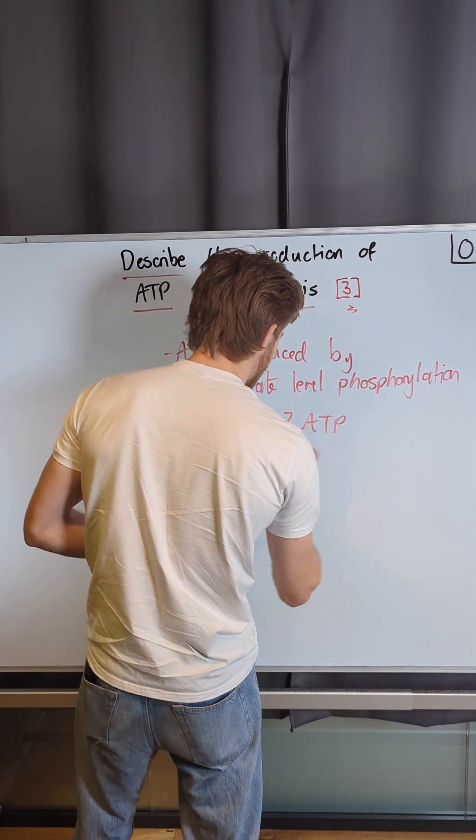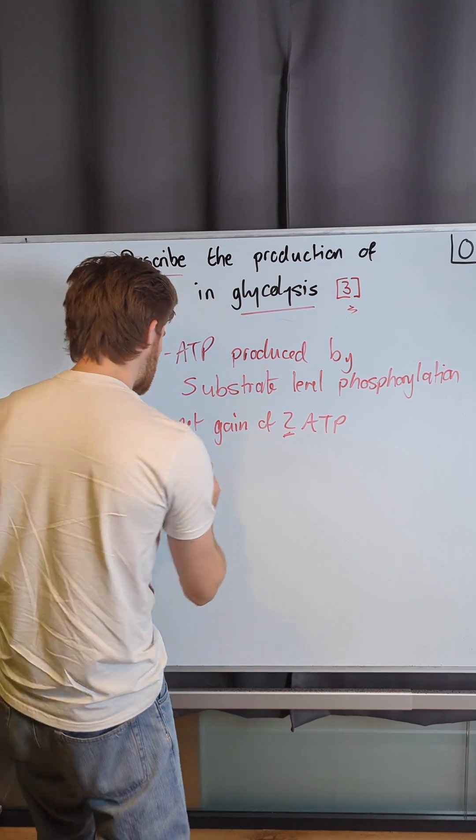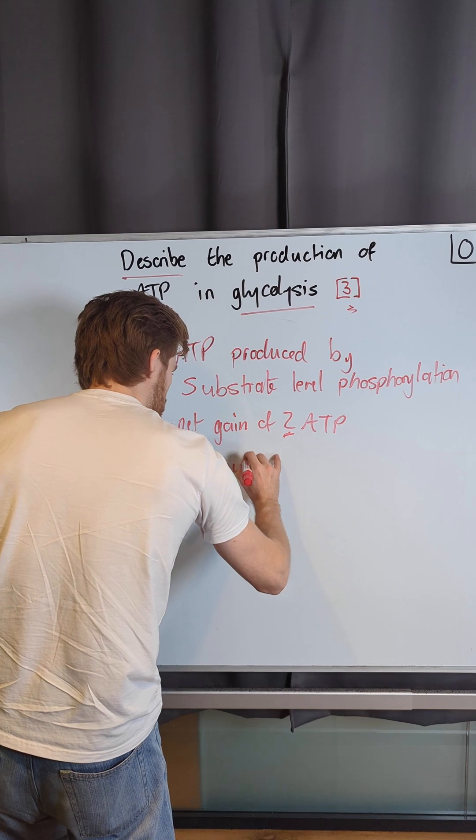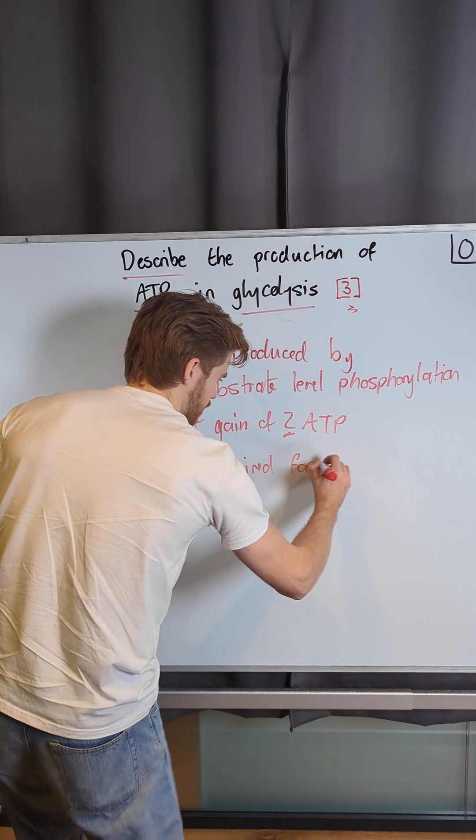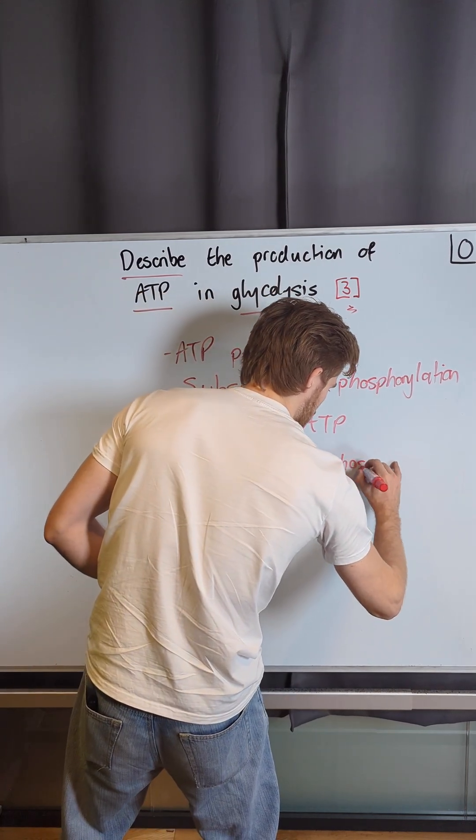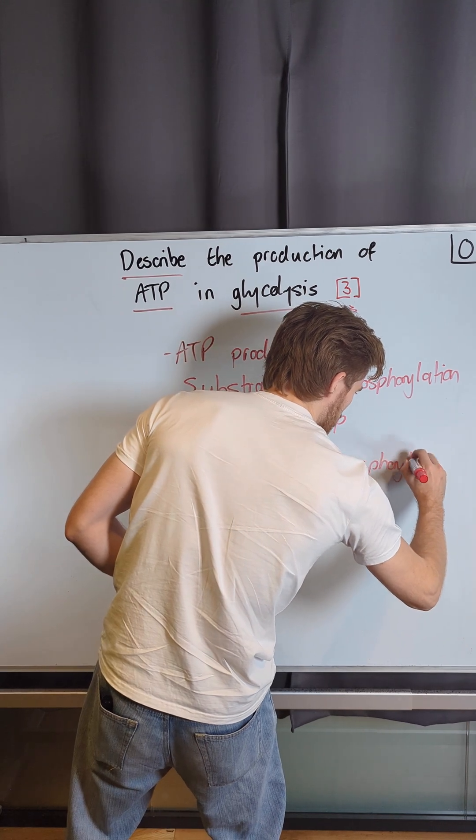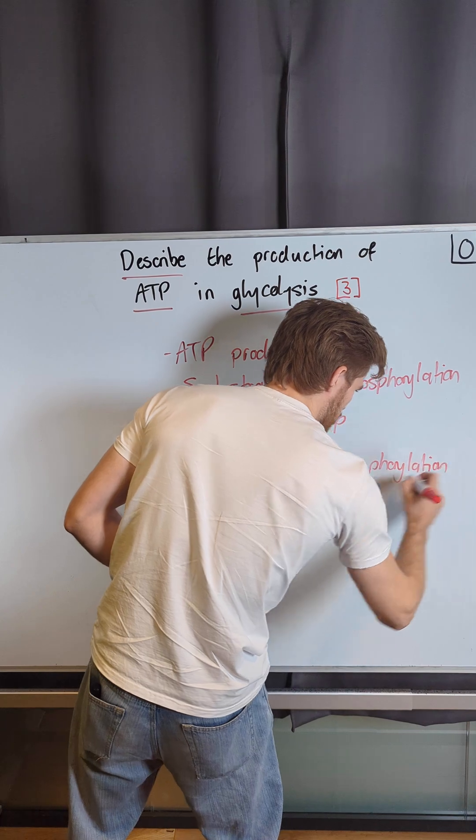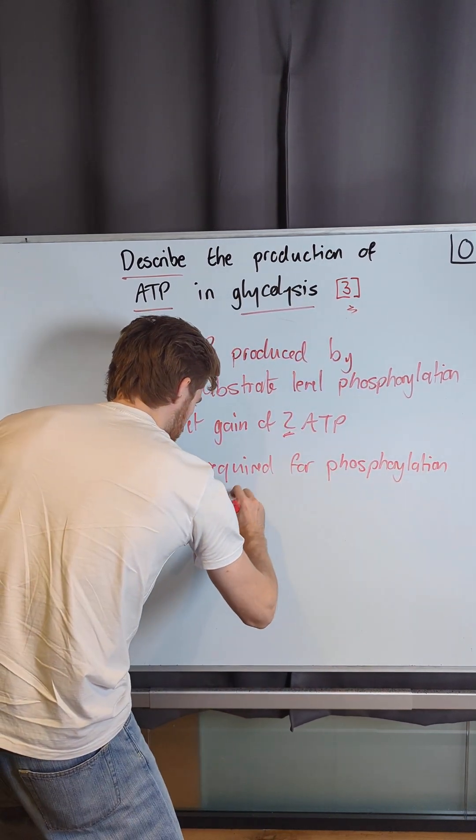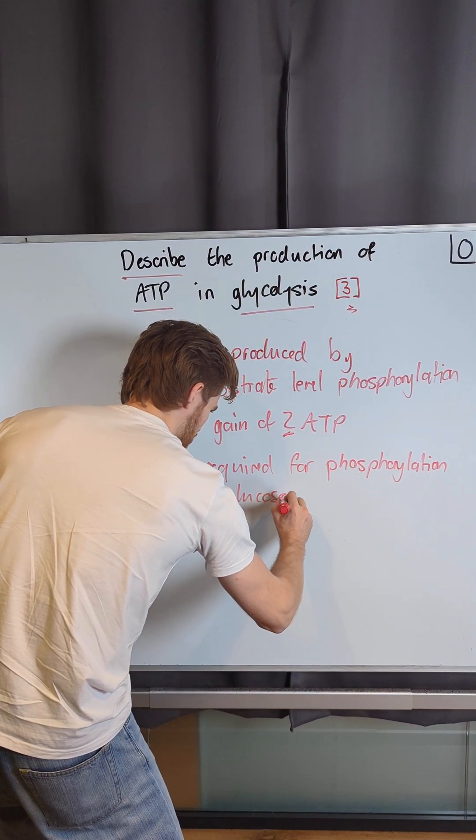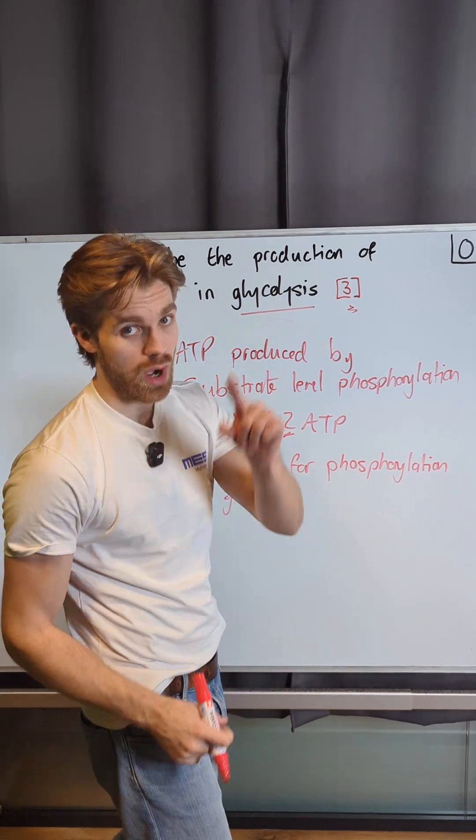But why do we get a net gain of 2 ATP? Well, two are required for the phosphorylation of the glucose. But then four are produced.